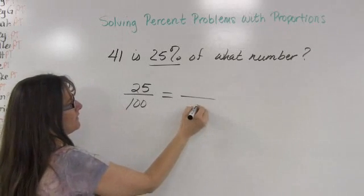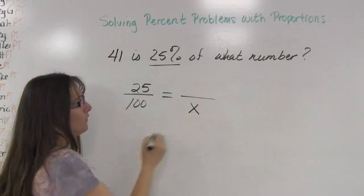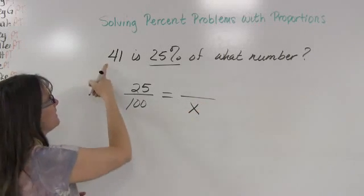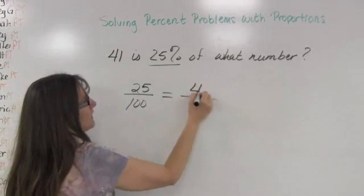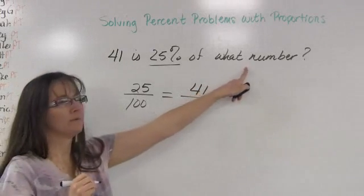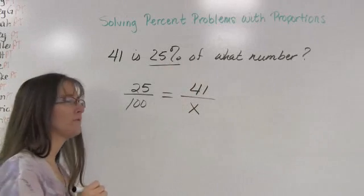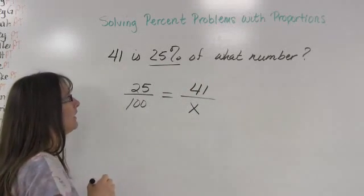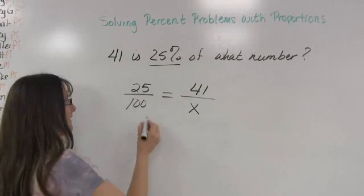And therefore, I'm going to represent my whole with an x. That means 41 is part of the number. 41 is part of whatever number I'm looking for. It's 25% of whatever number I'm looking for. And so it's time to cross-multiply and divide.